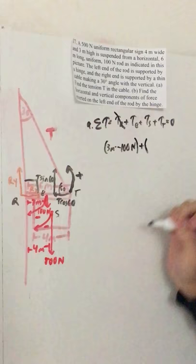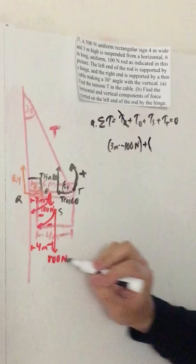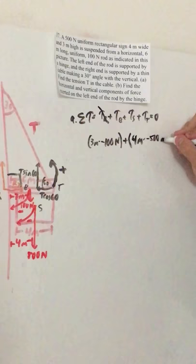And then the next thing we do is take TS. Now TS, point S is 4 meters away from point R. So we do 4 meters times minus 500 newtons.